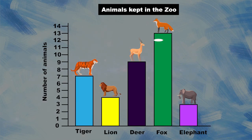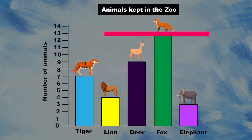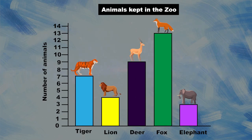Now one real good question for you: how many foxes are there in the zoo? Is it two? Well, no — it is 13, because the bar of the fox reaches to 13.